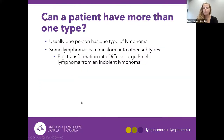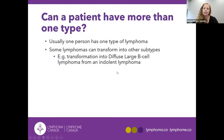Usually one person only has one type of lymphoma, but there are some cases where lymphomas can transform into other subtypes. A common example is transformation into diffuse large B cell, and this will be covered in the breakout sessions this afternoon.